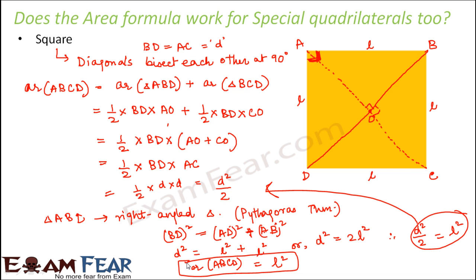With this, we have proved that the general formula for the area of any quadrilateral works for special quadrilaterals too. We took the example of a square and proved it. You can also prove it yourself for a rectangle, parallelogram, or any other special quadrilateral.